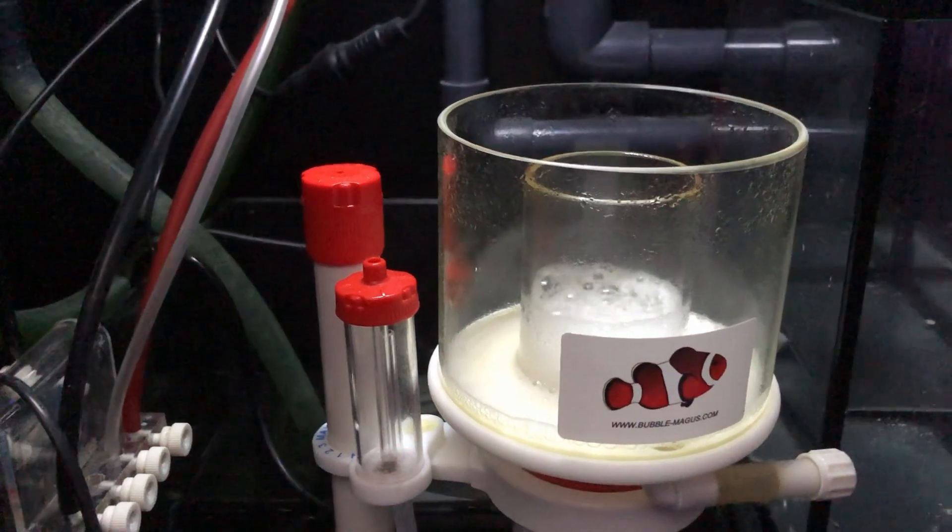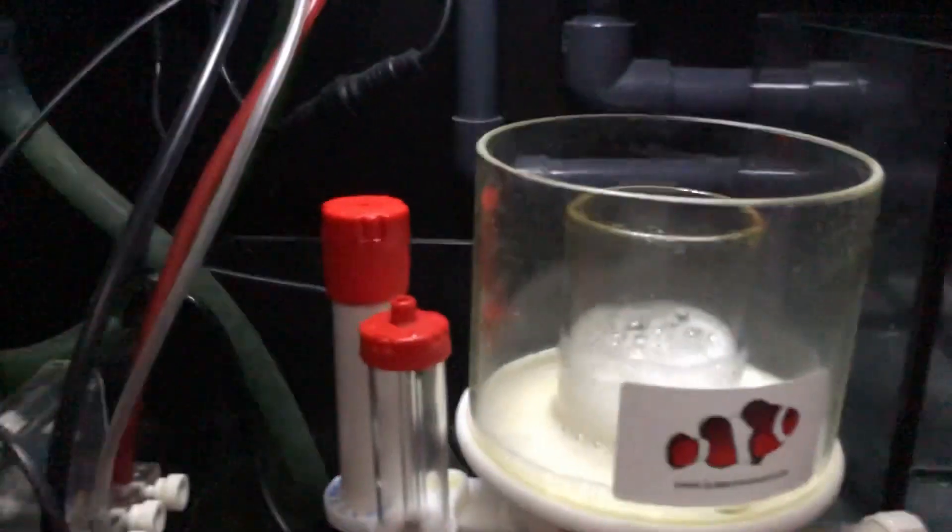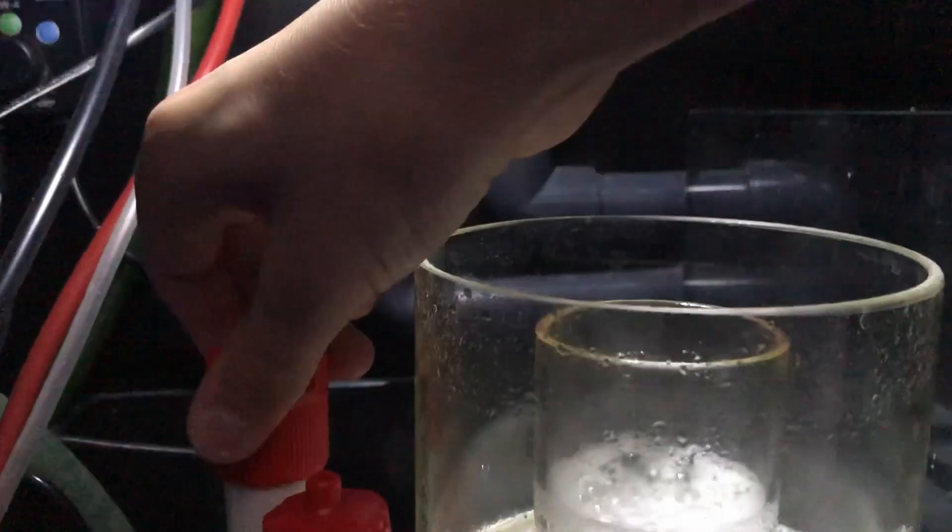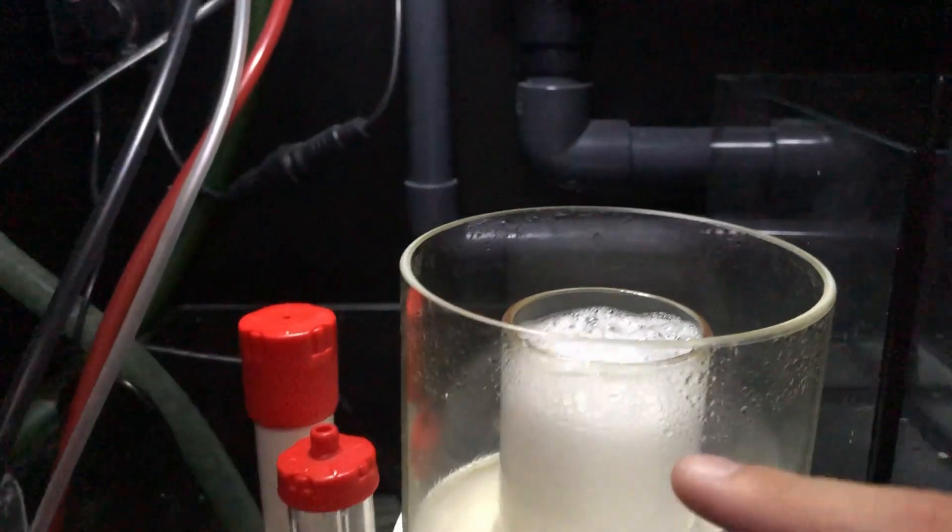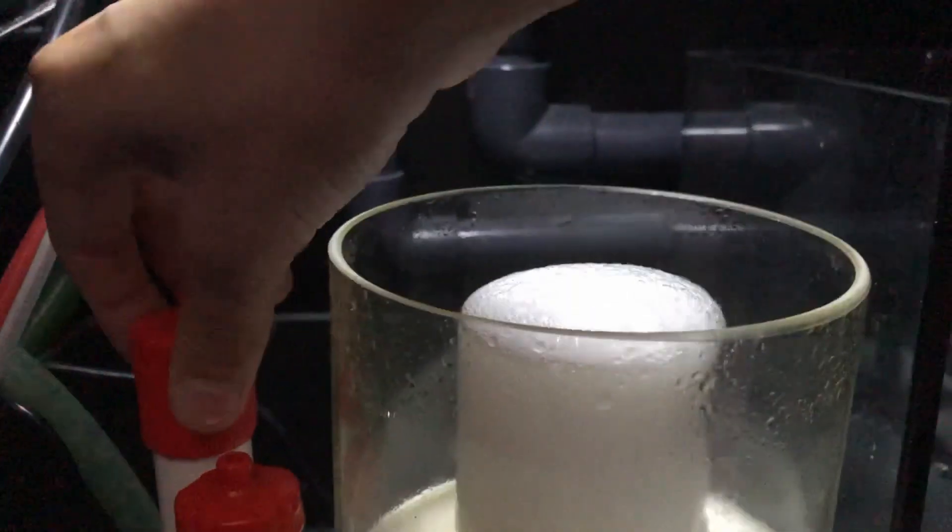So let me teach you about wet and dry skimming. Wet skimming is a type of skimming where your bubbles go all the way up the tube, you can see, and they pop right at the top. So not overflowing, not like that.